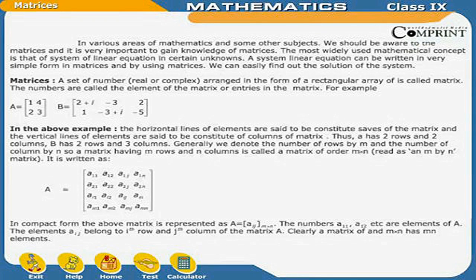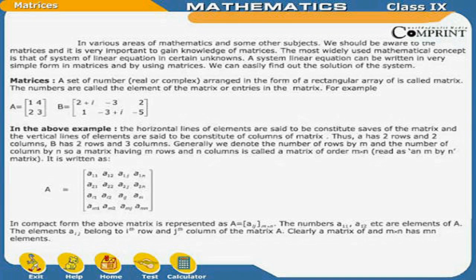Thus, A has 2 rows and 2 columns, and B has 2 rows and 3 columns. Generally, we denote the number of rows by m and the number of columns by n. So, a matrix having m rows and n columns is a matrix of order m by n, read as m by n matrix.